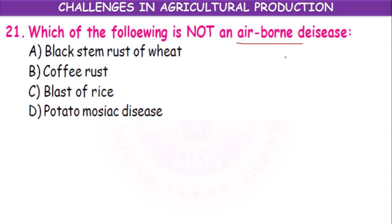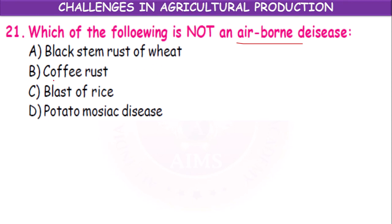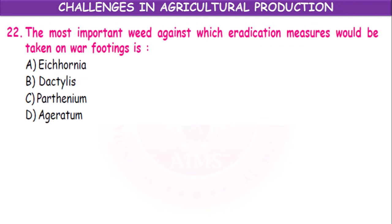Airborne diseases include rust of rice, blast of rice, black stem rust of wheat, coffee rust, and potato mosaic disease. Black stem rust of wheat, blast of rice, and potato mosaic disease are all airborne — this is a multi-correct answer.